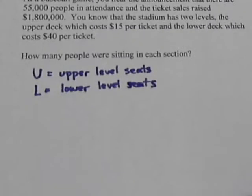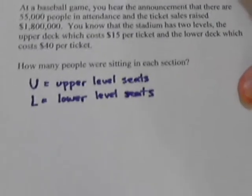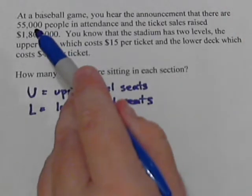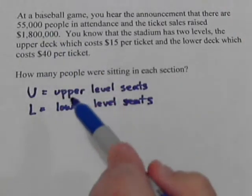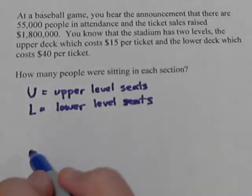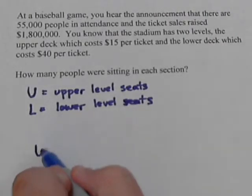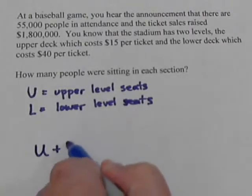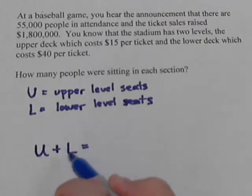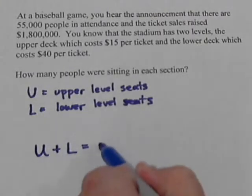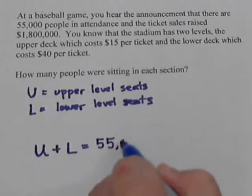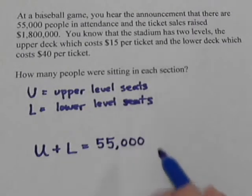What do we know? We know that there were 55,000 people at the game, and those people had to sit in either the upper or the lower level. So that gives us our first equation: U plus L equals 55,000.